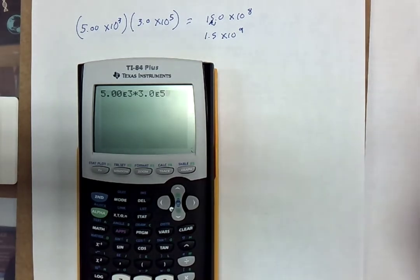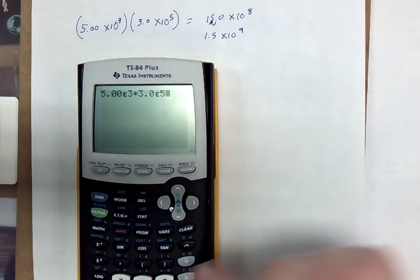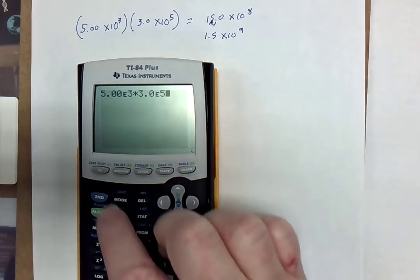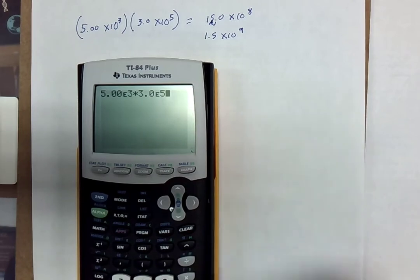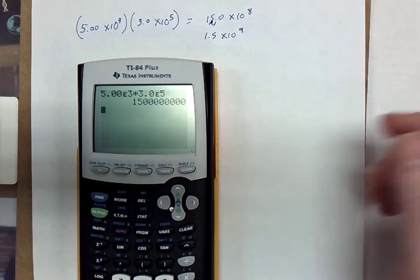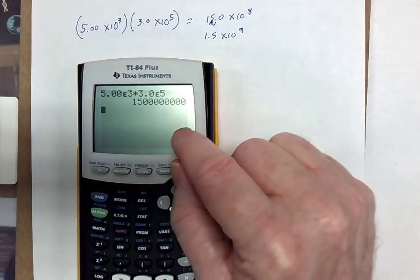The calculator knows scientific notation. When you press the EE button, 2nd EE on the graphing calculator, it understands that you mean times 10 to that number. You hit enter, and there you go. It gives you that answer.